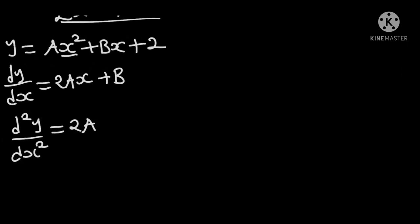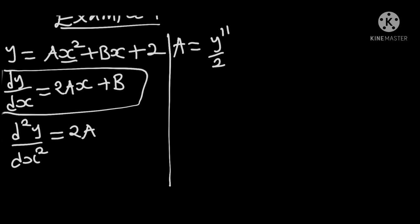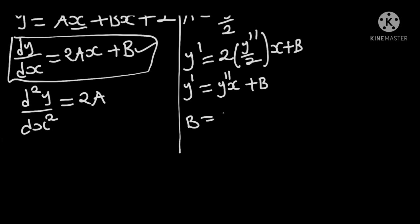Now let's make a the subject of the formula. So we have a equals to d squared y over dx squared, written as y double prime, divided by 2. Since we have the value of a, we can substitute it to get the value of b. So we have y prime equals to 2 times a, but a is y double prime over 2, times x plus b. So 2 and 2 cancel: y prime equals y double prime times x plus b. Therefore, b equals y prime minus x times y double prime.